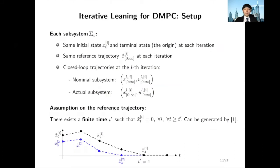The setup of our method is similar to iterative learning control literature. Here, we assume that the initial and terminal states, as well as the reference trajectory of each subsystem, remain the same over all iterations. Once the system reaches the terminal state, it's considered as having finished one iteration, and we reset the state to the initial state and do it all over again.